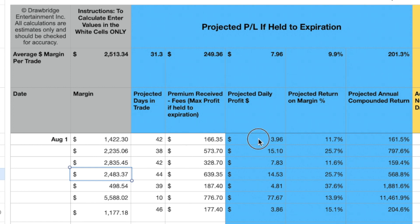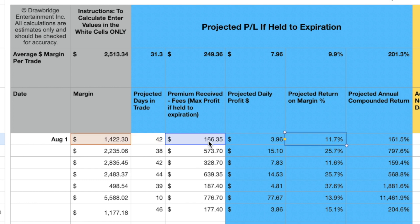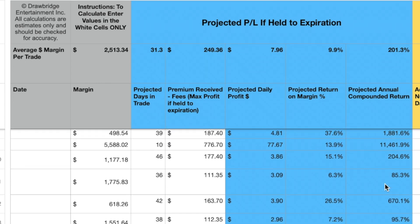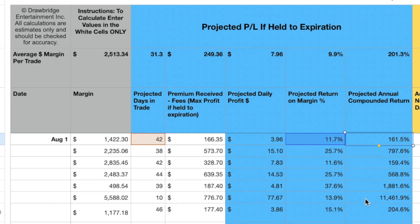What that's going to do is calculate out: if you can make $166 in 42 days, it works out to $3.96 per day, and then the projected return on margin is $166 divided by the original margin amount. Then it takes the compounded return and asks: what if we made 11% every 42 days? How much money did we make at the end of the year? We're making 161%. Some trades I place have very large compounding returns, and oftentimes we're expecting to take those off in a very short timeframe.